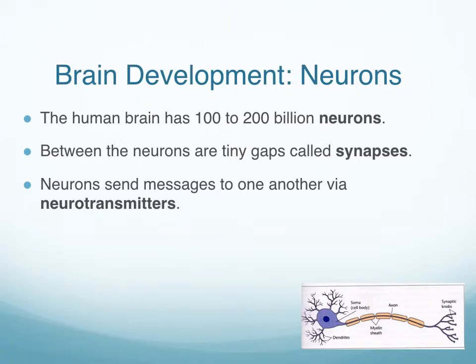In terms of neurons, the brain has about 100 to 200 billion neurons, most of which are born during the embryonic period in prenatal development. The neurons are basically nerve cells that store and transmit information, and the way that they transmit information is through these tiny gaps called synapses between the neurons. They communicate via the synapse using neurotransmitters, which are chemicals that cross that synaptic gap.